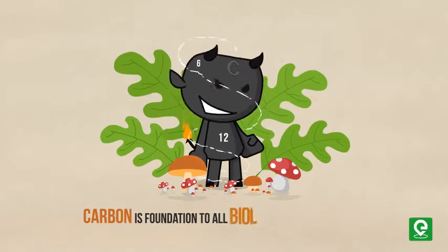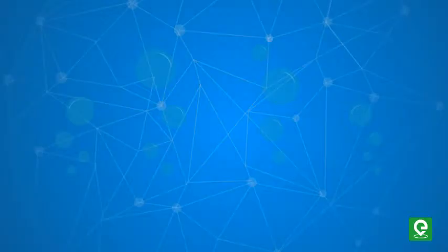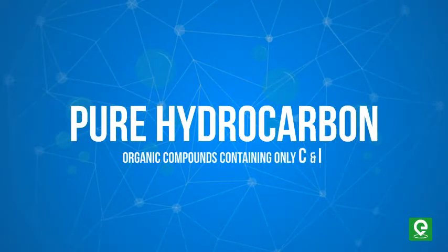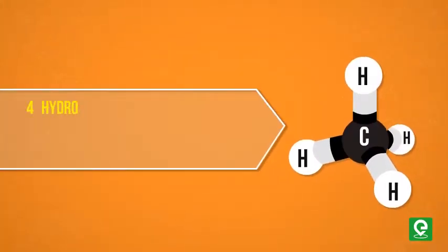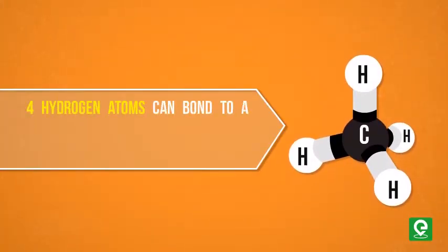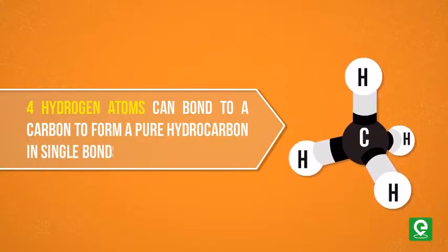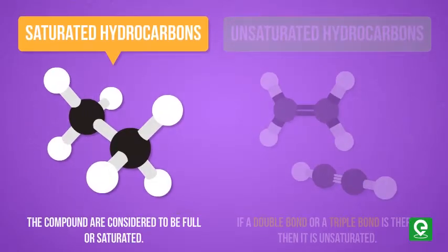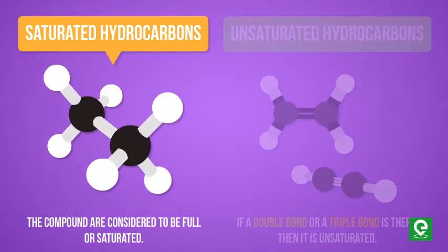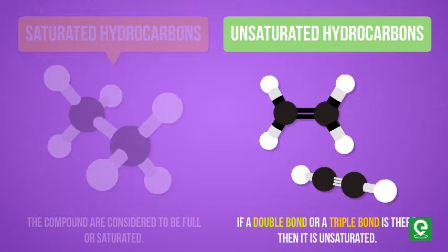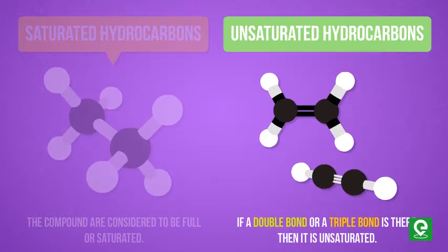Carbon is the foundation of all biological molecules. The simplest organic molecules are pure hydrocarbons, containing only carbon and hydrogen. Four hydrogen atoms can bond to a carbon to form a pure hydrocarbon in single bonds. A compound having single bonds is considered to be full or saturated. If a double bond or a triple bond is present, then it is unsaturated.